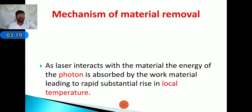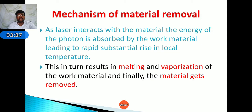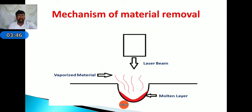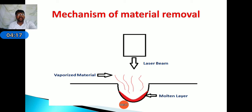Regarding the mechanism of material removal: as the laser interacts with the material, the energy of the photon is absorbed by the work material. The laser beam falls on the workpiece, leading to a rapid, substantial rise in local temperature. This results in melting and vaporization of the work material. The electrical energy is first converted into a laser beam, which falls on the point to be machined, converts into heat energy, and the metal is eroded and vaporized due to localized temperature.